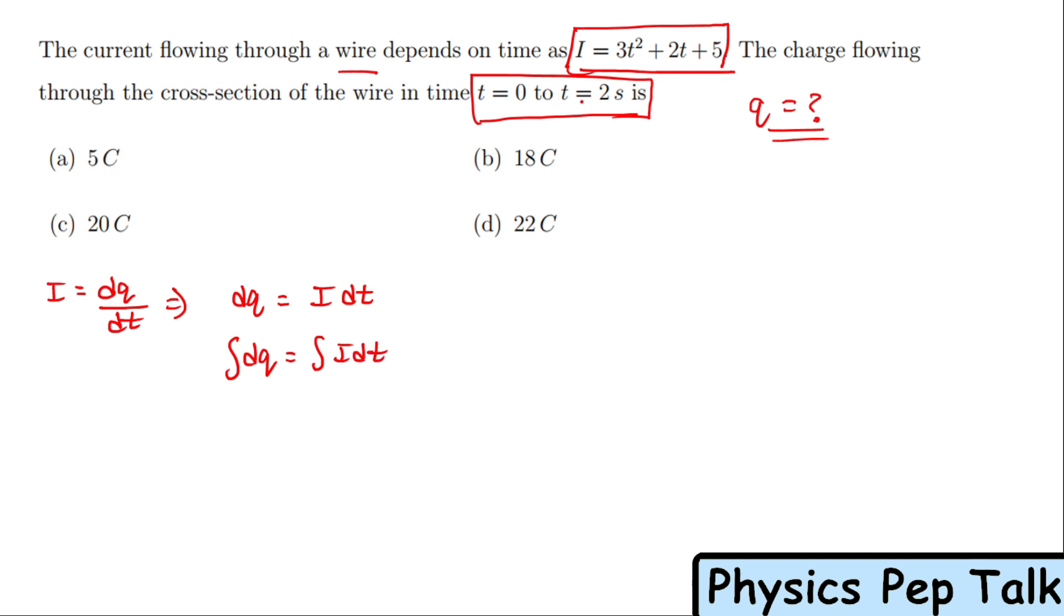Integral of dq is equal to integral of i dt. Here they've given a fixed time value from 0 to 2 seconds. So I have to apply the limits 0 to 2, which is integral from 0 to 2 of i dt. What is the value of i? It is 3t² + 2t + 5, integrated with respect to time.